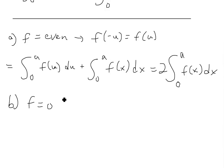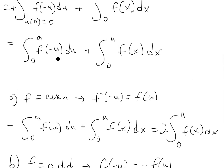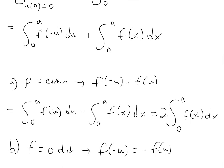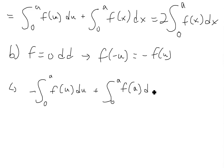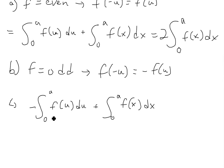When f is odd, f(negative u) equals negative f(u). Plugging this in, the first integral becomes the integral from zero to a of negative f(u) du, and we add the integral from zero to a of f(x) dx. Since these are the exact same function — just different variables — one is the negative of the other. They cancel out and we get zero.